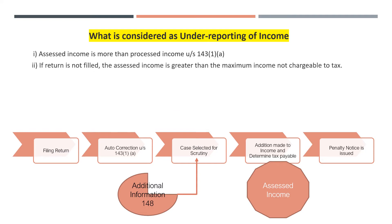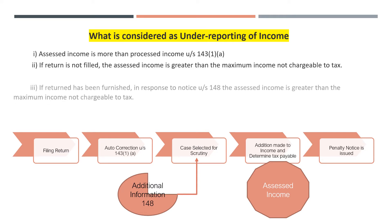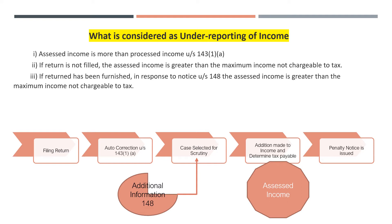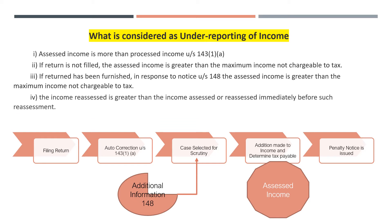If the return has not been filed, the assessed income is greater than the maximum income not chargeable to tax. That maximum amount not chargeable to tax will be considered, and the additionally assessed income will be added to it. If the return has been furnished in accordance with a notice under section 148a, the assessed income will be greater than the maximum amount not chargeable to tax or the income declared in the return on which tax was already paid. Any reassessed additional income will also be considered as underreporting of income.